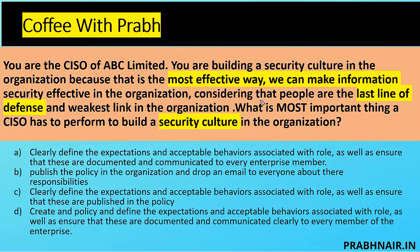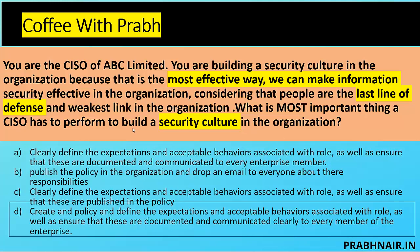It is critical to train people. Option A: clearly define expectations and acceptable behavior associated with roles and ensure these are documented in the policy. Option B: publish the policy and email everyone — but that gives no assurance people are following it. Option C: define expectations and ensure they are published in the policy. Option D: create a policy that clearly defines expectations and acceptable behavior associated with roles, and ensures these are documented and communicated clearly to every member of the enterprise. Option A is covered by D, so the answer is D.